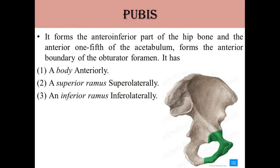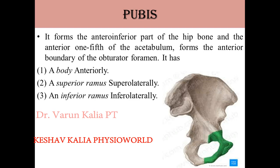Next is the pubis. It forms the antero-inferior part of the hip bone and the anterior one-fifth of the acetabulum, and forms the anterior boundary of the obturator foramen. The pubic bone is present anteriorly and inferiorly, and contributes one-fifth of the acetabulum. The pubic bone has a body, a superior ramus situated superiorly, and an inferior ramus situated inferiorly.